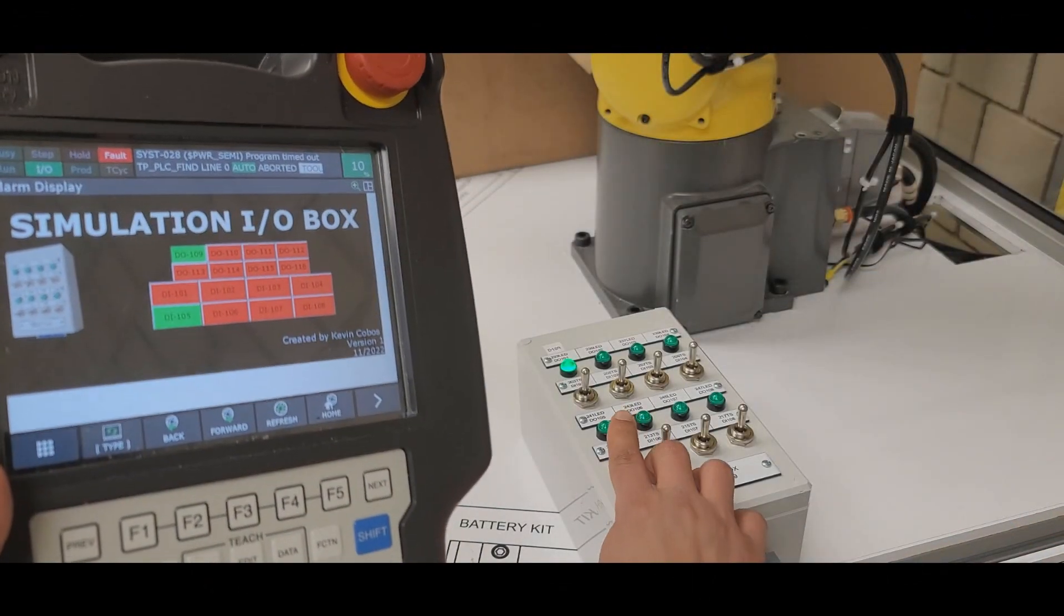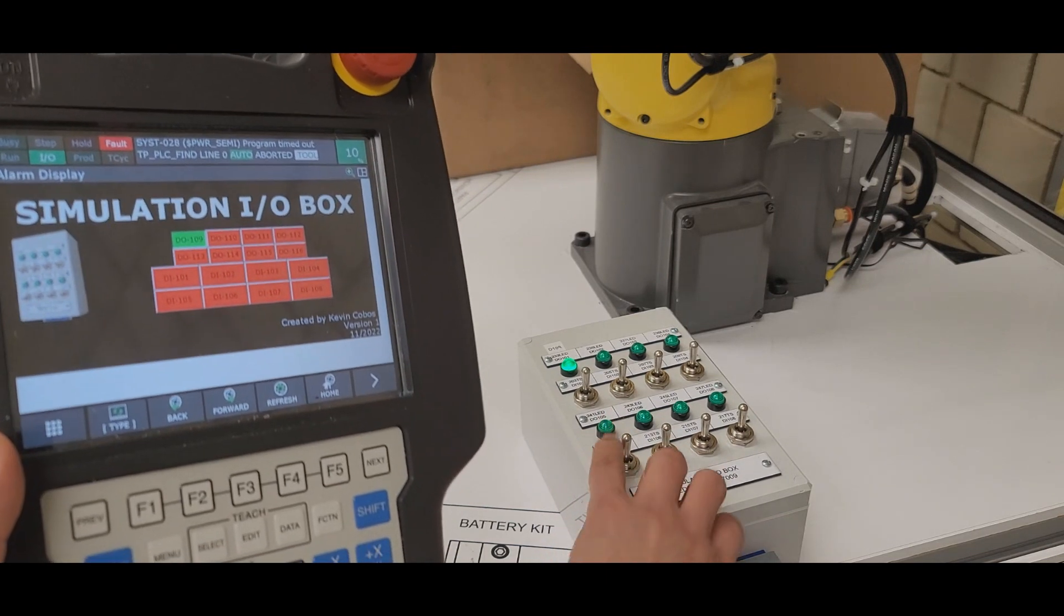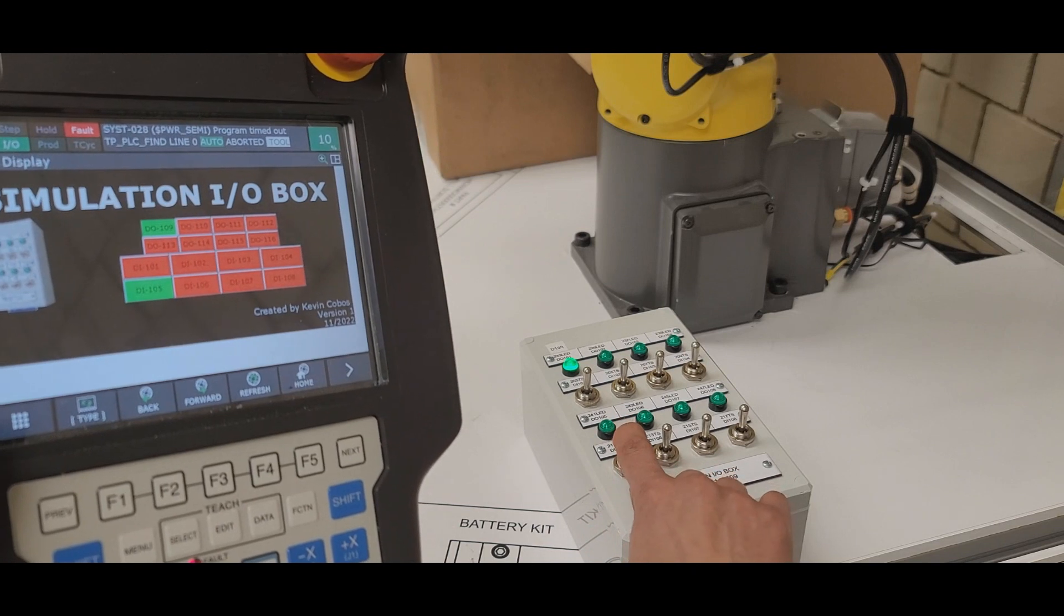When we activate the analog switch on the box, the robot teach pendant shows us what signal is coming in, turning on the button that corresponds to that signal coming from the PLC, in our case the simulated I.O.'s box signal.